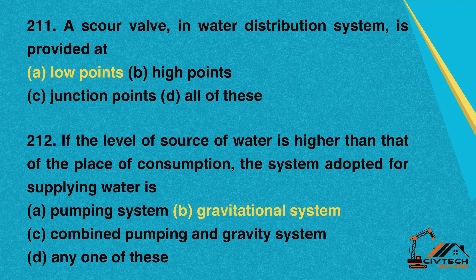Question 211: A scour valve in a water distribution system is provided at. A. Low points. B. High points. C. Junction points. D. All of these. Correct option: A. Low points.